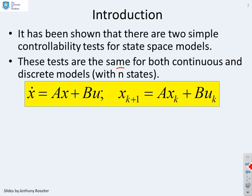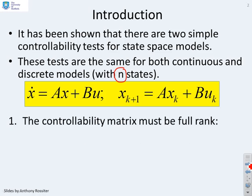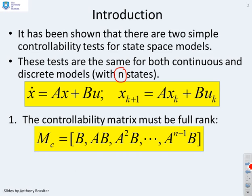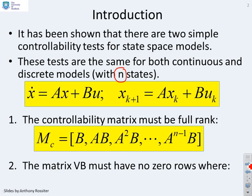Here we've emphasized that we're going to have N states. So the controllability matrix must be full rank, and the controllability matrix is defined as MC equals B, AB, all the way up to A to the N minus 1 B. Alternatively, you can check the matrix VB must have no zero rows, where V is the left eigenvector, so W lambda V is the eigenvalue eigenvector decomposition of the matrix A.